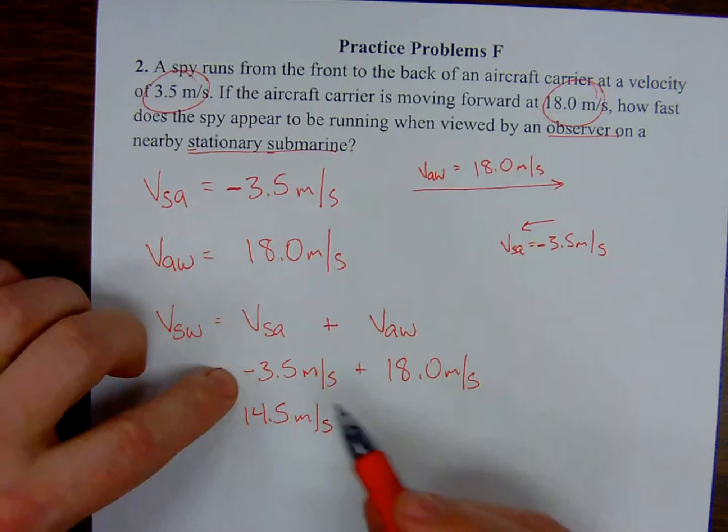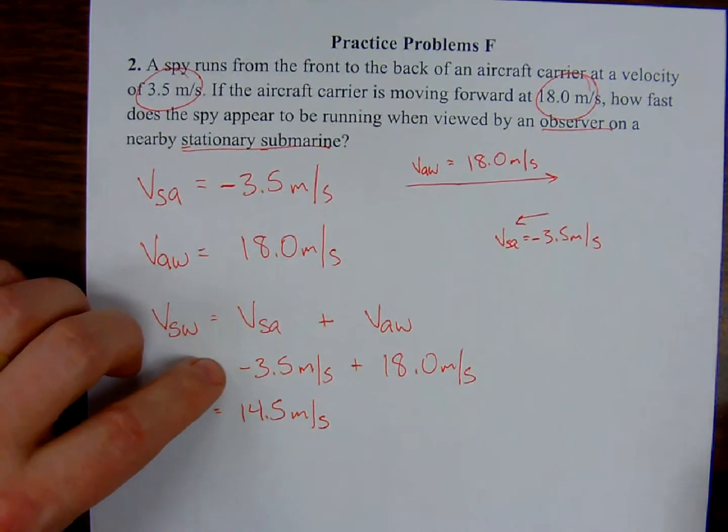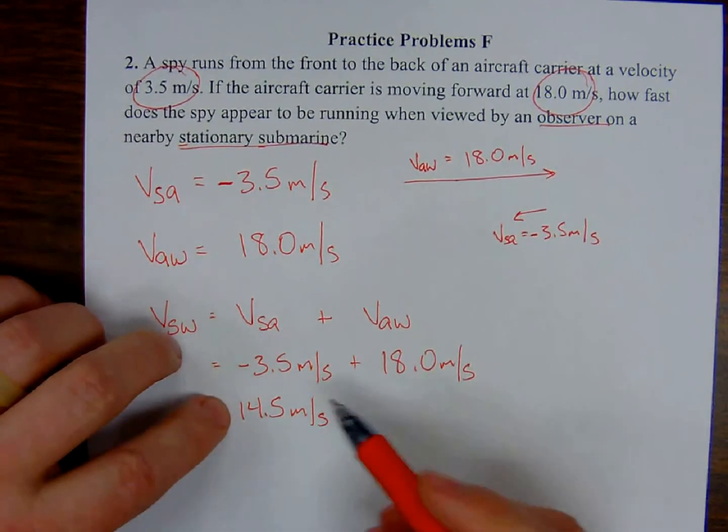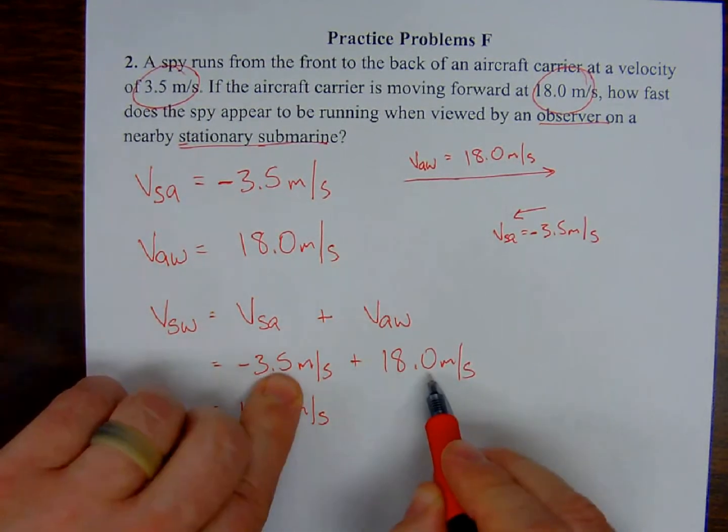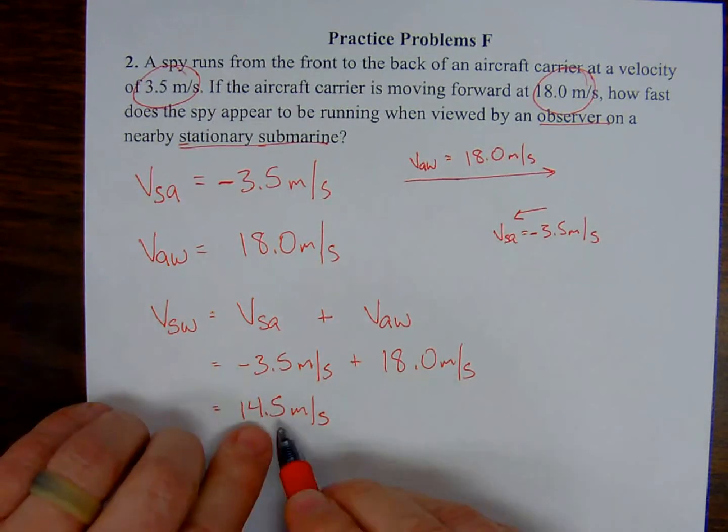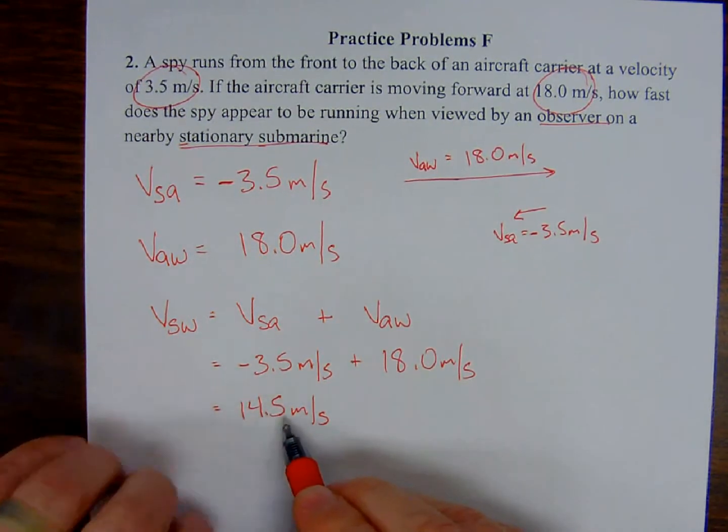So we have overall velocity. But what direction is the spy moving? Now, again, the spy is running backwards like the opposite direction of the aircraft carrier.